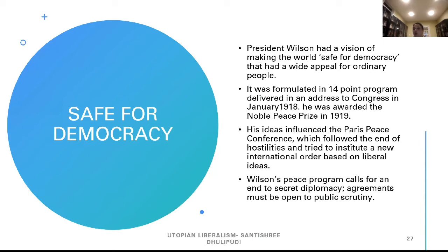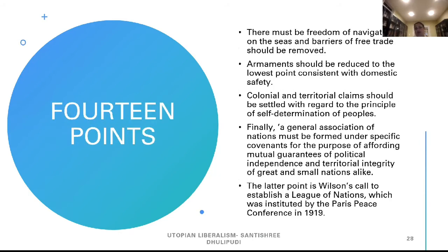His ideas influenced the Paris Peace Conference which followed the end of hostilities and tried to institute a new international order based on liberal ideas. Wilson's peace program called for an end to secret diplomacy — agreements must be open to public scrutiny, covenants openly arrived at. Among the 14 points: there must be freedom of navigation on the seas and barriers to free trade should be removed; armaments should be reduced to the lowest point consistent with everybody's safety; and colonial and territorial claims should be settled with the principle of self-determination of peoples.